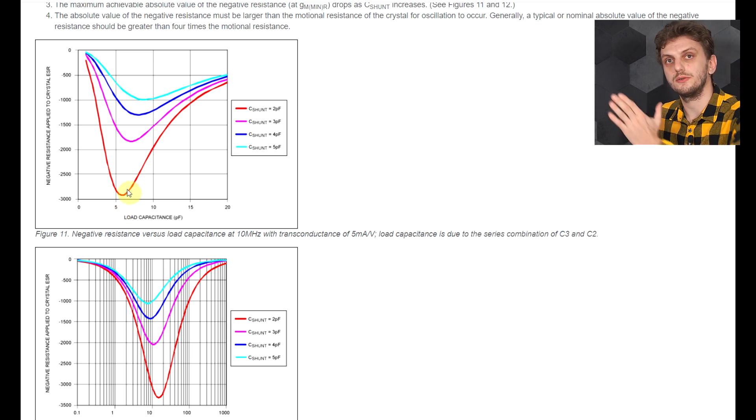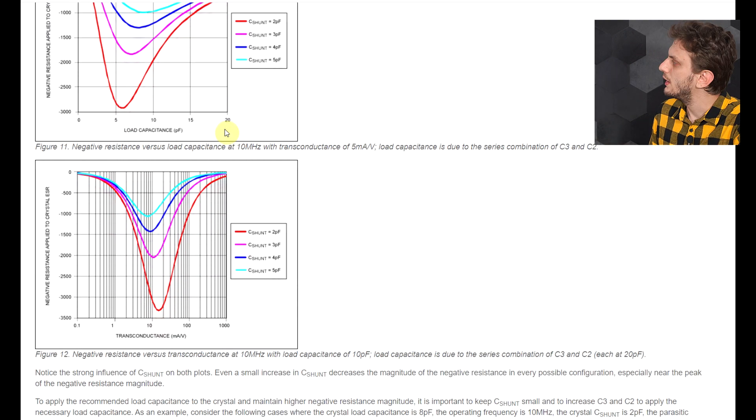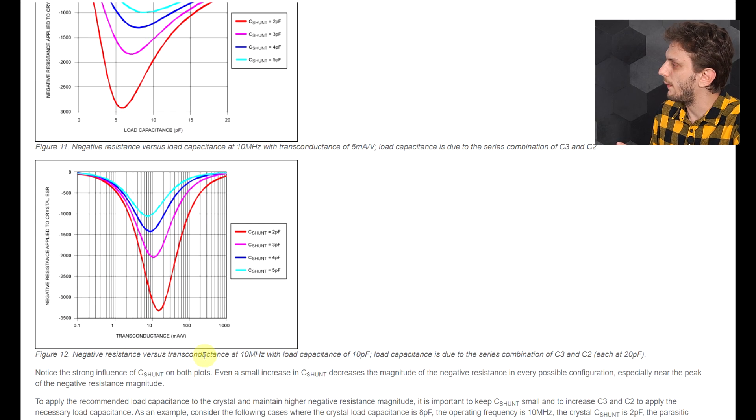Now ideally, you want to sit on the right side of this graph. So higher load capacitance to give lower negative resistance. So in case you have too much load capacitance and you're getting too little negative resistance, you might want to try to choose a component that requires less load capacitance, so you get a higher negative resistance. Now the other graph we find here is similar to this one, but rather than varying the load capacitance, they vary the gain.